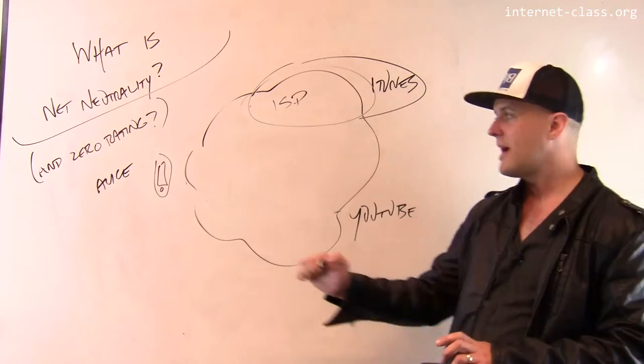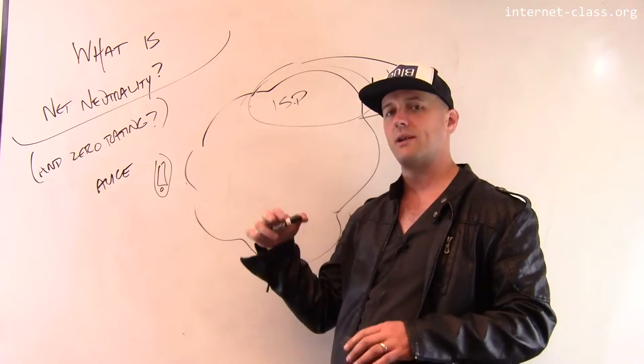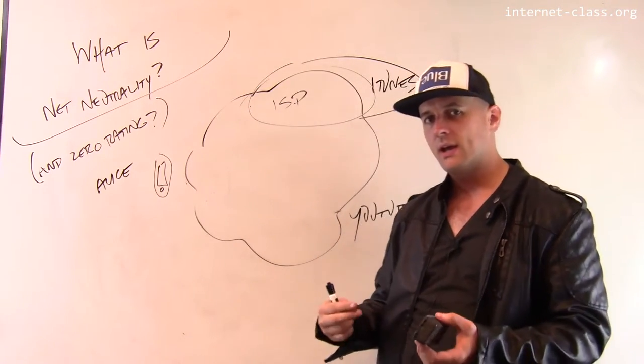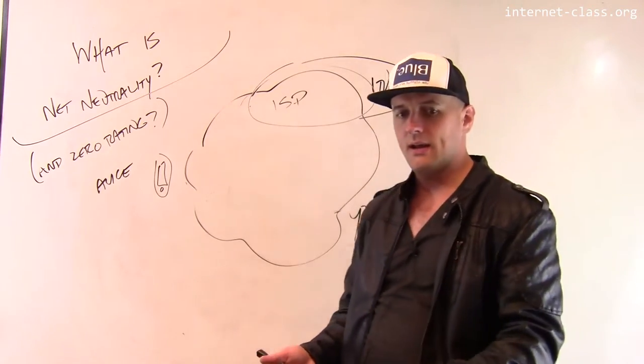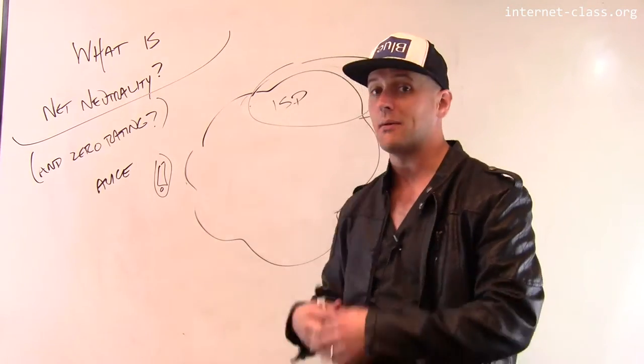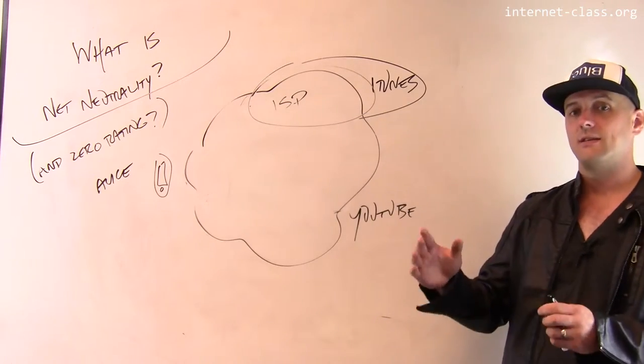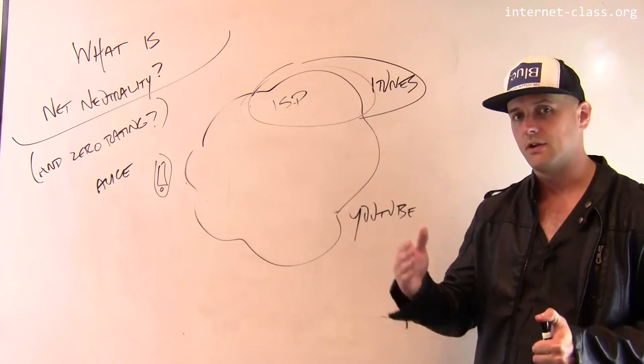Normally, the traffic that she sends over that mobile data network in most parts of the world is metered. So you pay for a certain amount of data per month. And if you use more than that, you pay more. So most data that's used on these mobile data networks is metered and you pay for a certain amount.